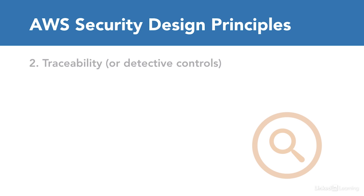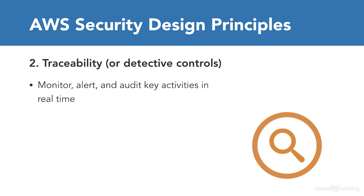The next pillar is traceability, which is also called detective controls. This includes monitoring, alerting, and auditing on key activities — if possible, in real time. An example of that would be administrative logins.